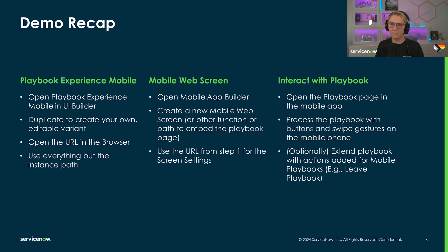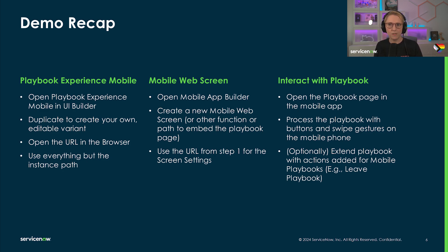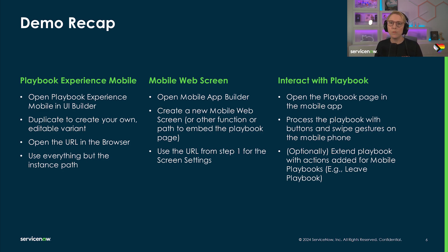Let's quickly review the steps taken. First, we checked out the Playbook Experience Mobile experience in UI Builder. The default page variant is read-only, and to edit it, you will have to duplicate the variant. Then you can preview the experience to get the URL to use in the mobile app builder. Work with your mobile app admins or developers on the best way to navigate to the playbook — but for the sake of the demo, we used a simple mobile web screen.